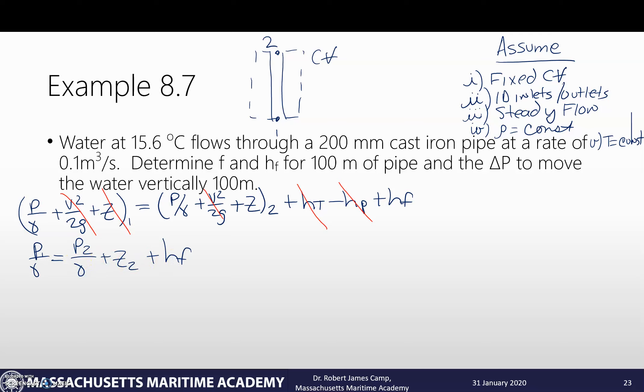And so now if I do want to calculate out the pressure difference, if I move that pressure over what I'm going to get is delta p is going to be equal to gamma times Z2, that takes care of our height, plus H sub f. So that's what our pressure difference is going to be. So this is the equation that we need to solve. I know Z2. I can look up gamma. What I have to calculate out is HF.